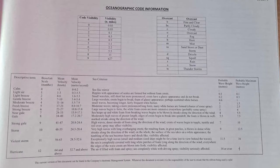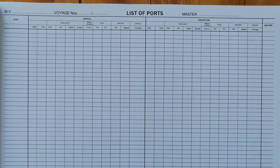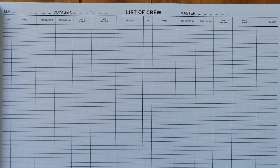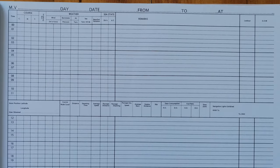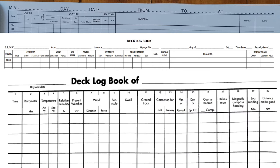There you can also find weather codes to use to fill in the appropriate boxes on the daily pages. There are also usually pages with a list of ports and a list of crew that should be filled in. In practice, quite often the port of call and crew lists are attached on the relevant pages. Let's look at the daily pages of the deck log book where you have to make entries each watch.